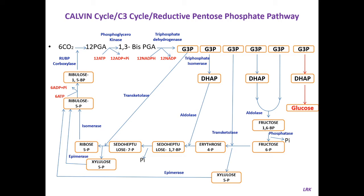Up to here carboxylation is over. Before undergoing reduction, it first undergoes phosphorylation — gets activated — and then it undergoes a reduction reaction. The PGA (phosphoglyceric acid) undergoes phosphorylation in the presence of phosphoglycerokinase and forms 1,3-bisphosphoglyceric acid; here 12 ATP molecules are consumed. In the next reaction, this 1,3-bisphosphoglyceric acid in the presence of NADPH undergoes reduction to glyceraldehyde 3-phosphate, in the presence of triose phosphate dehydrogenase.